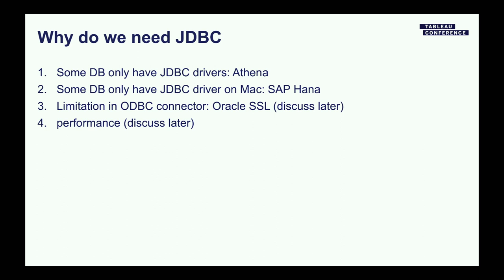Why do we need JDBC in the first place? There are several concrete reasons. First, we have databases that only support JDBC — Amazon Athena is a good example, as it only had a JDBC driver when we wrote the connector. Second, SAP HANA only supports JDBC on Mac. Third, we have some functional limitations in the ODBC connector — Oracle SSL is a good example, which I will discuss in the next slide. And last but not least, there is a performance difference between ODBC and JDBC, which Liwen will discuss more.